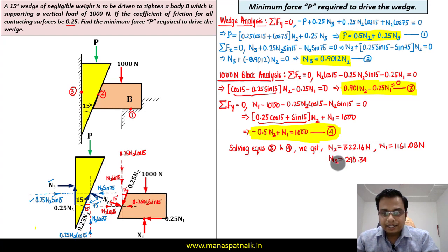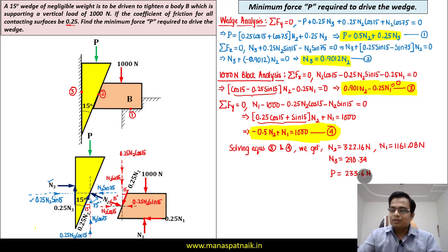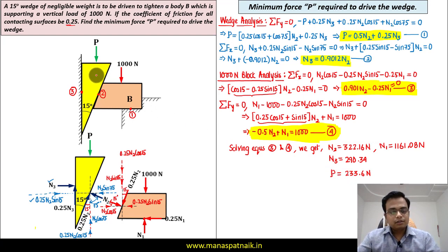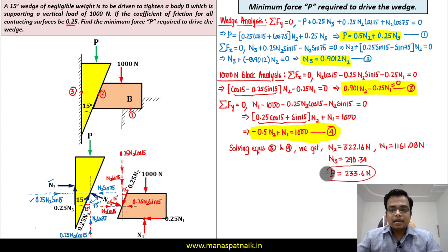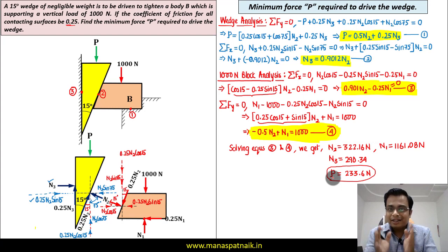Finally, substituting N2 = 322.16 and N3 = 290.34 into equation 1 gives P = 0.5 × 322.16 + 0.25 × 290.34 = 233.6 Newtons. This is the force required to drive the wedge downward. This is exactly how force P is calculated using the analytical technique of ΣFx = 0 and ΣFy = 0. In the next video, the same problem will be solved using Levi's theorem — stay tuned!